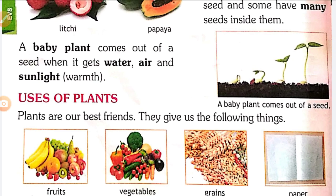A baby plant comes out of a seed when it gets water, air, and sunlight.